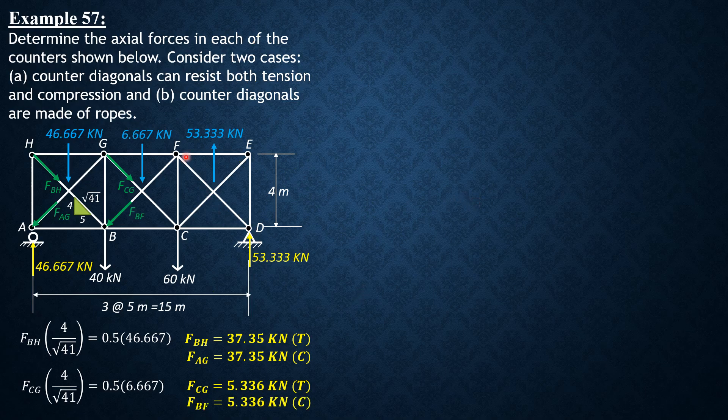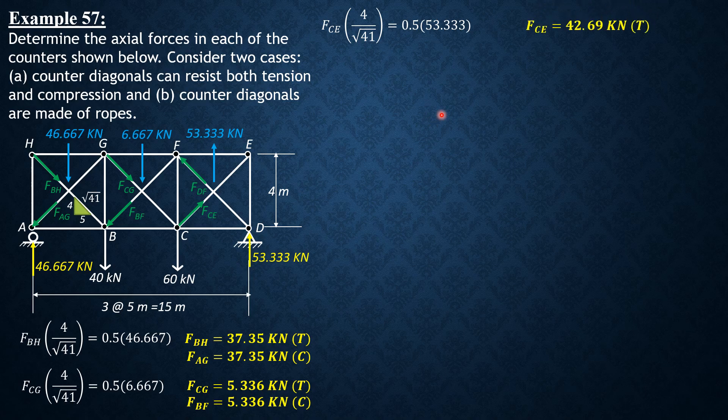We then proceed to panel CD. In panel CD, DF should be compression while CE must be in tension. So let's compute FCE. The vertical component FCE times 4 over square root of 41 is equated to half the panel shear, 0.5 of 53.333. So FCE is 42.69 kN tension. And FDF by symmetry is also 42.69 kN compression.